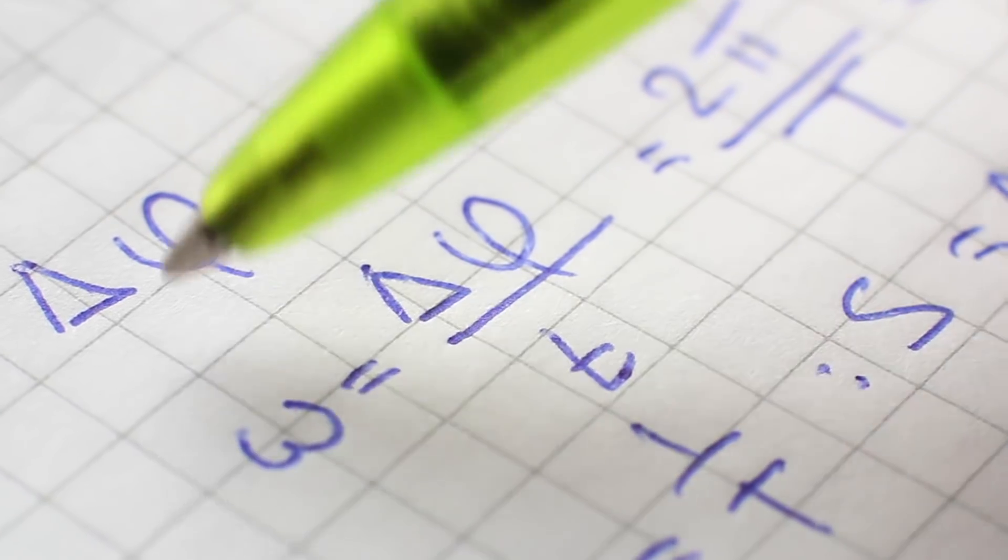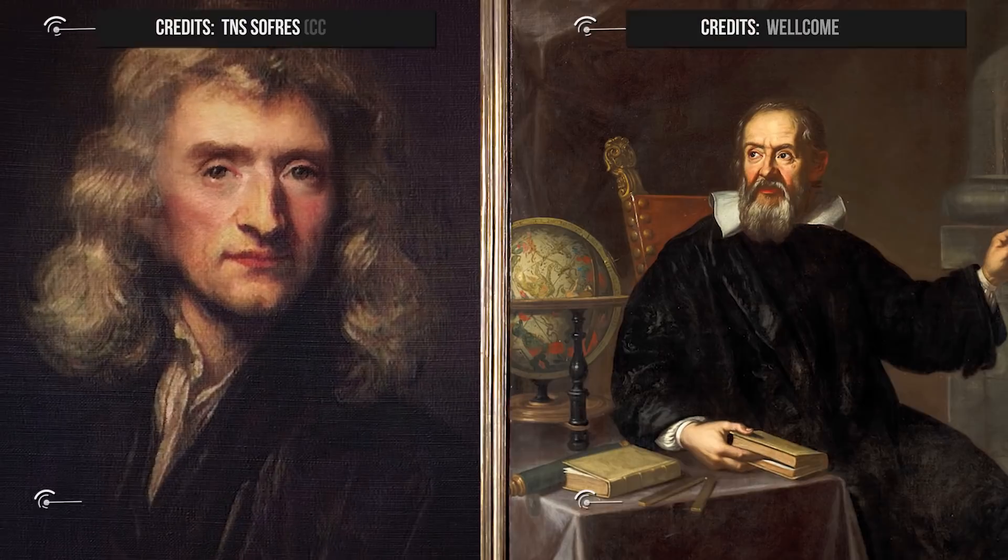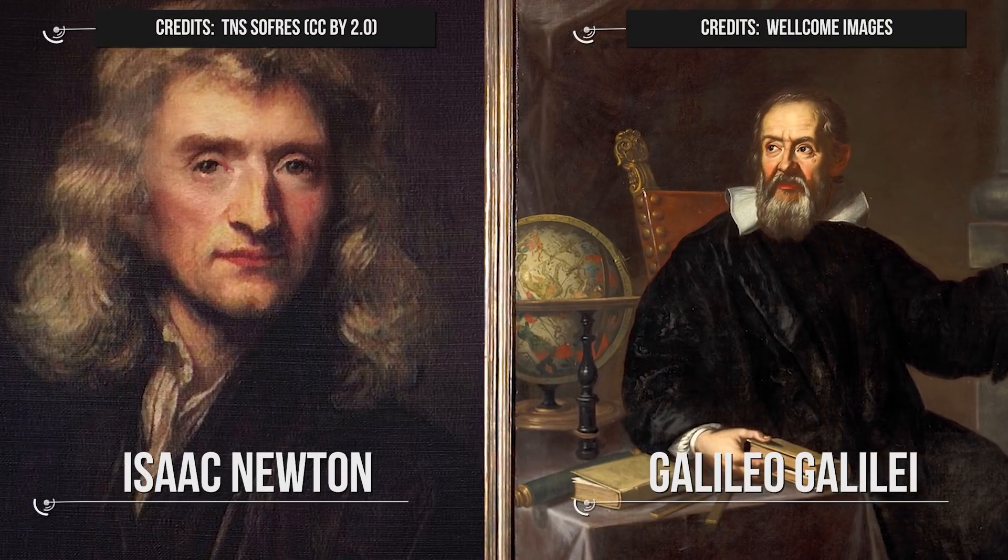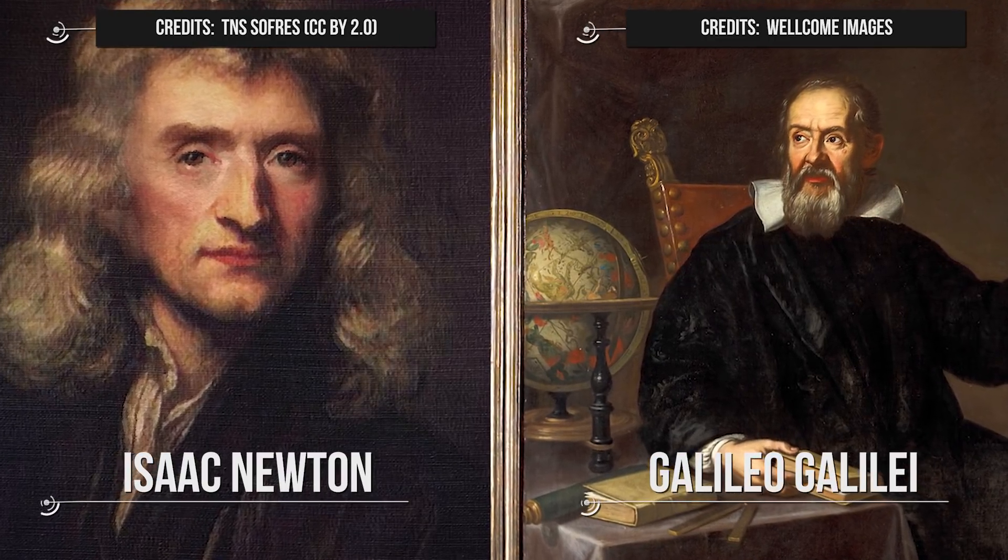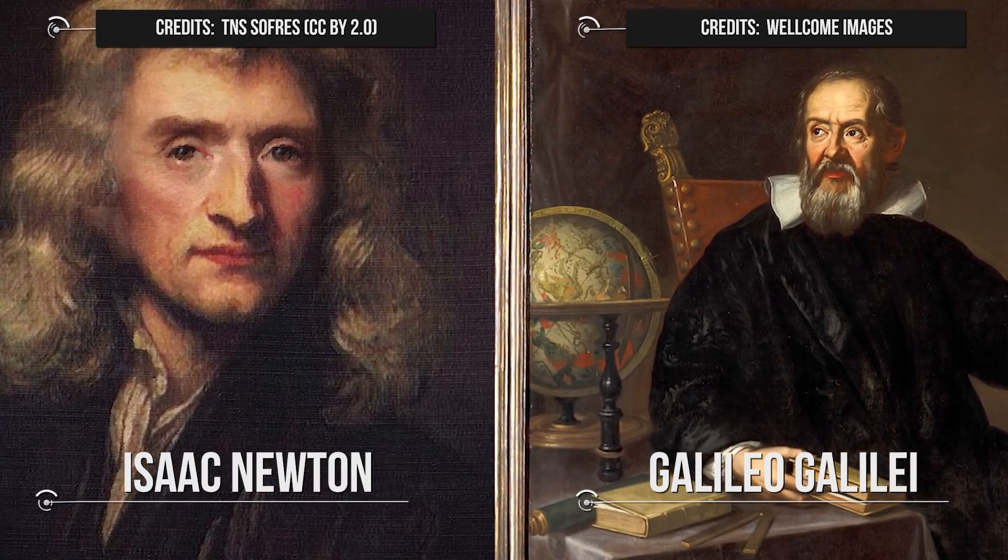What is this theory about? Let's start from the main principle that Isaac Newton and Galileo Galilei used to describe the world in a scientific way, the principle of relativity.